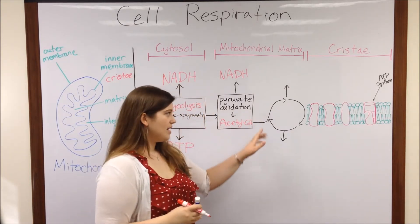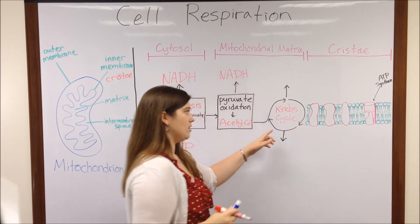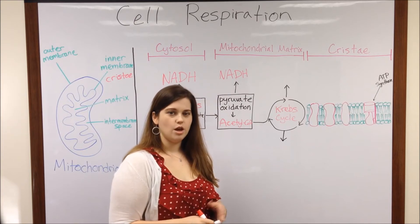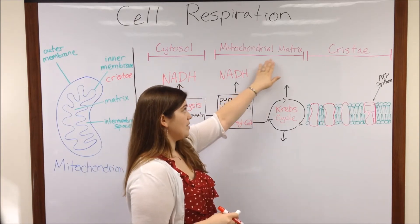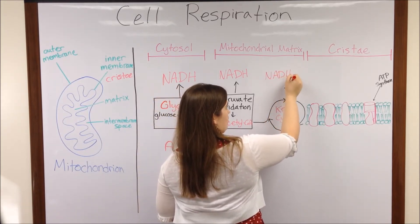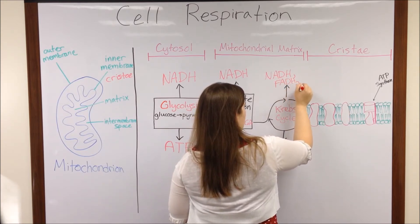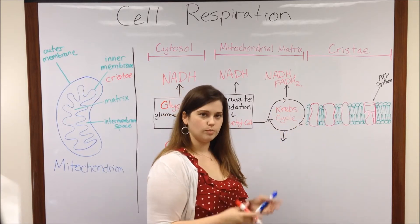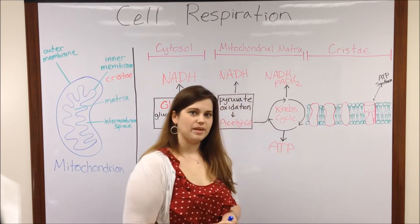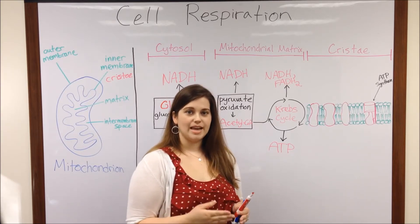Acetyl-CoA then enters the Krebs cycle. The Krebs cycle has a few different names — it's also called the citric acid cycle, the tricarboxylic acid cycle, and the TCA cycle — but they're all the same names for this process, which is also happening in the mitochondrial matrix. The Krebs cycle generates a few electron carriers: more NADH, and also another electron carrier called FADH2. In the process of the Krebs cycle, which involves multiple steps and enzymes, we're also making some more ATP. Remember that ATP is that really important energy storage molecule for the cell — a very easy way for the cell to store energy that it can get to quickly when needed.